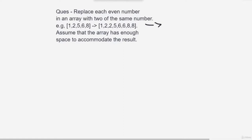For example, given 1, 2, 5, 6, 8, we replace all even numbers (2, 6, and 8) with a pair of those numbers, resulting in 1, 2, 2, 5, 6, 6, 8, 8. You can assume there is enough space. The input array also has -1 markers at the end. You have to replace each even number with two of the same number — be careful that we are replacing in place. You can pause this video and try it yourself.